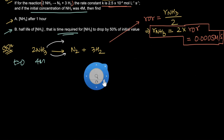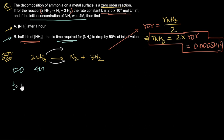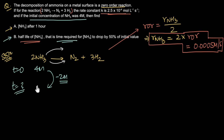Now for part (b), we need to calculate the half-life of ammonia. Half-life is the time required for the concentration to drop by 50% of its initial value. The initial concentration is 4 molar, so the half-life is the time required for the concentration to drop to 2 molar — meaning 2 molar of ammonia must react.